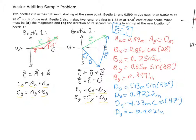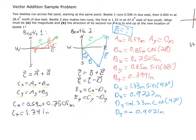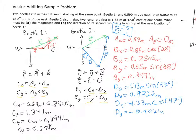Now that I have all the vector components, I can find cx and cy. cx = ax + bx = 0.59 + 0.7505 = 1.341 meters. Then cy = ay + by = 0 + 0.3991 = 0.3991 meters.